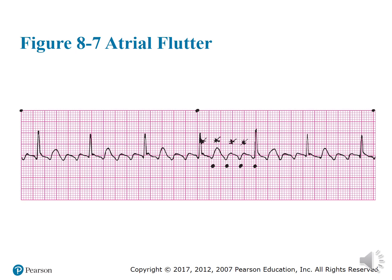This is what atrial flutter looks like. It kind of looks like shark teeth or a picket fence — instead of P waves, they have this sharp, wiggly pattern that pokes out. It's like a picket fence or a whole bunch of flutters.